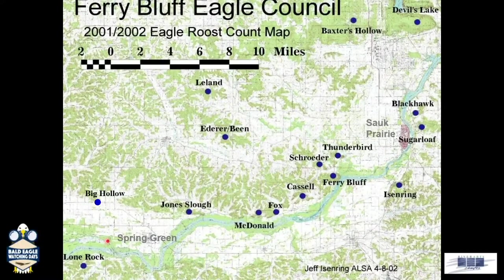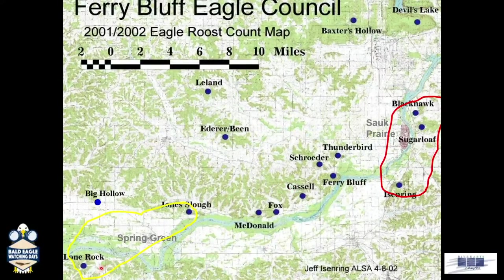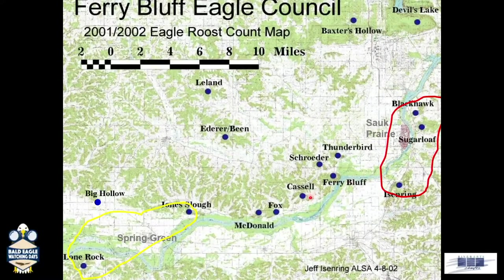Most of the eagles can be located upriver at the dam when it's cold and blustery like it is today. But if it's warm and the river is open and free of ice, the eagles can be located downriver. The dam becomes important only when conditions force eagles into the upriver area because much of the river is unavailable to them.